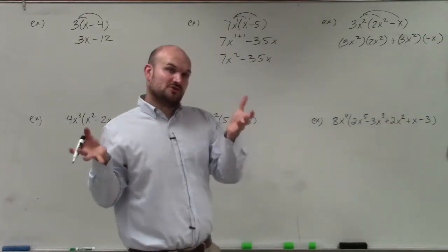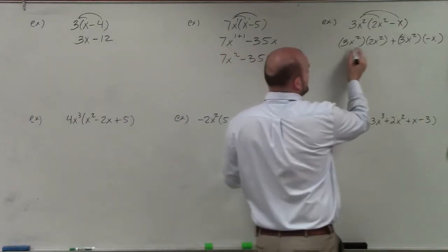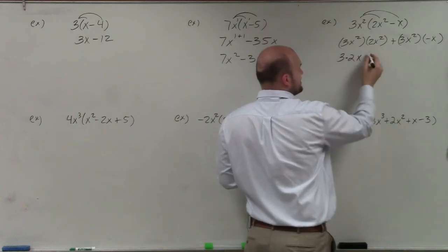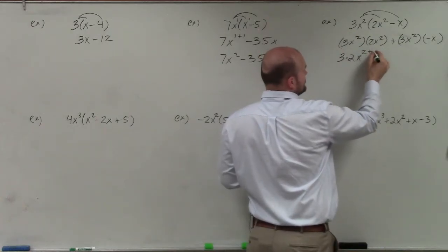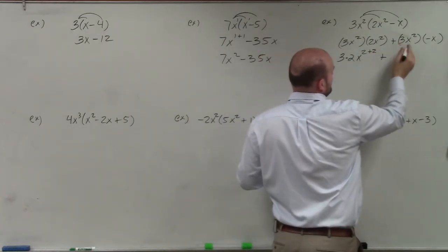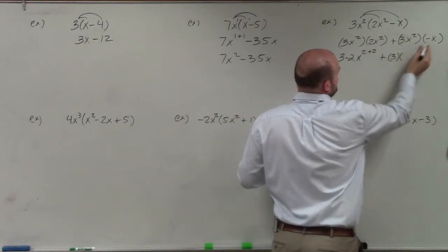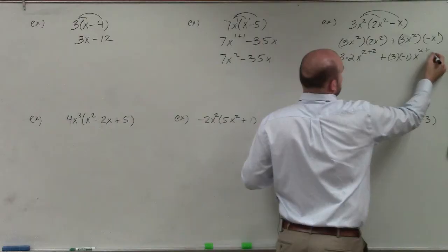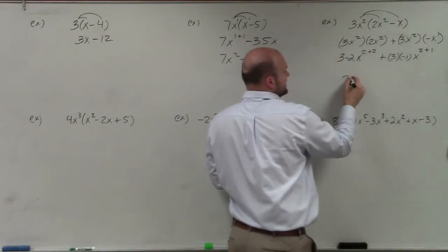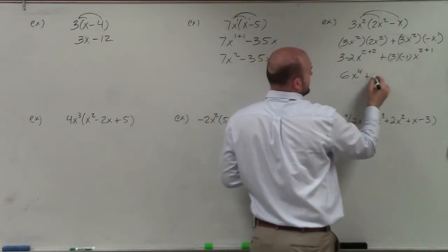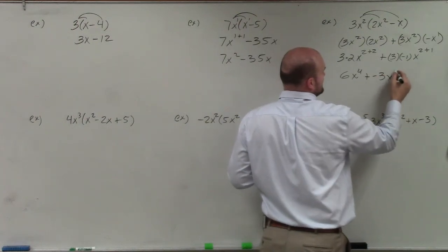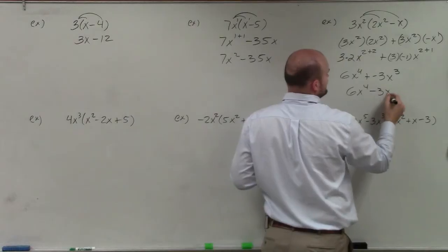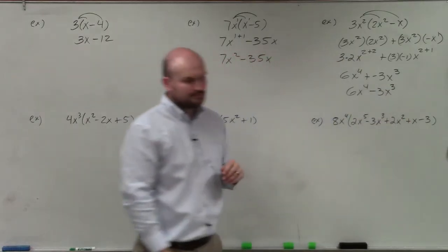So again, remember when you're multiplying monomials by applying the power rule, you're going to multiply 3 times 2, so do 3 times 2, and then you're going to multiply x squared times x squared, so you add the powers, which is 2 plus 2, and then plus here, I'm going to do 3 times that negative as a negative 1, and then x squared plus that has a power of 1. So therefore, I get 6x to the fourth, plus a negative 3x to the third, which I can just rewrite as 6x to the fourth minus 3x cubed.